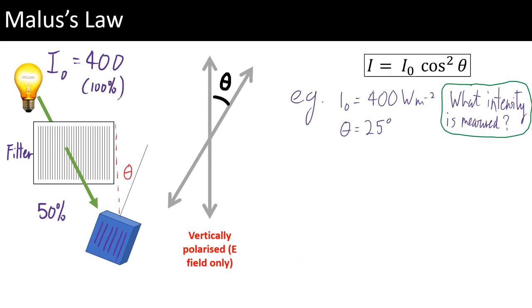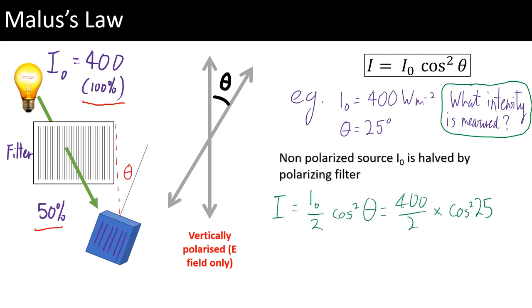And here we go. So the trick to this is realizing that the first filter actually decreases the intensity by 50% anyway. So what we've actually got to do is half that 400 already before we even use that number. So only 200 watts per meter squared make it through this first filter. Now remember, you don't square the angle. You find cos of 25 and then square that number. So here's the math. Here is the answer.